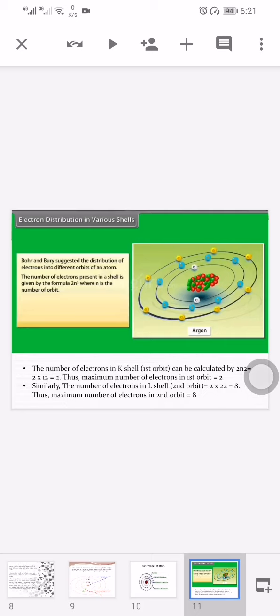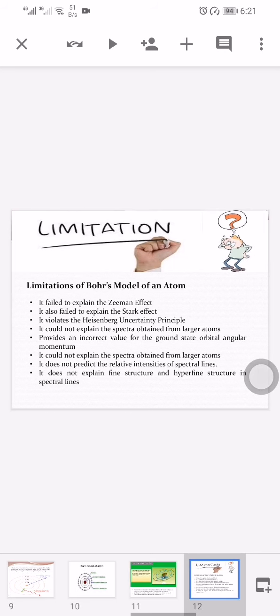The number of electrons in K shell can be calculated by 2n² equals 2 times 1 squared. The maximum number of electrons in the first orbit equals 2. Similarly, the number of electrons in L shell, the second orbital, equals 8. Thus the maximum number of electrons in the second orbital is 8.